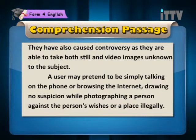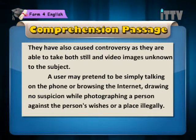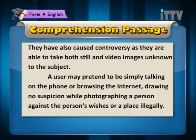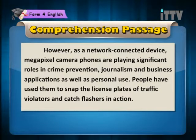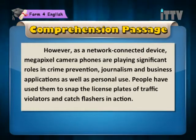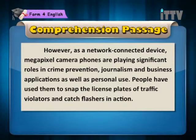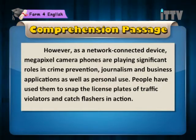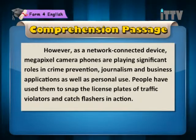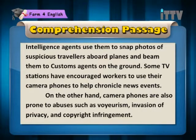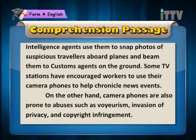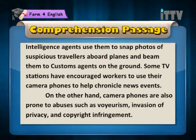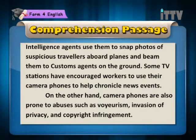A user may pretend to be simply talking on the phone or browsing the internet, drawing no suspicion while photographing a person against the person's wishes or a place illegally. However, as a network connected device, megapixel camera phones are playing significant roles in crime prevention, journalism and business applications as well as personal use. People have used them to snap the license plates of traffic violators and catch crimes in action. Intelligence agents use them to snap photos of suspicious travellers aboard planes and beam them to customs agents on the ground. Some TV stations have encouraged workers to use their camera phones to help chronicle news events.